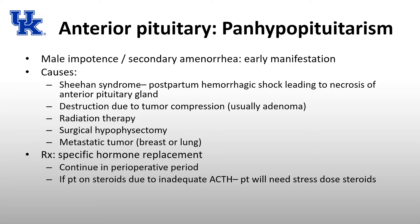Some early signs of panhypopituitarism include impotence in men and secondary amenorrhea in women. There are a couple of causes. One is Sheehan syndrome, which is postpartum hemorrhagic shock leading to necrosis of the anterior pituitary gland, so all six hormones are not secreted. The second cause is destruction of the anterior pituitary due to compression by a tumor, usually an adenoma. Other causes include radiation, surgical removal, or metastatic tumors.